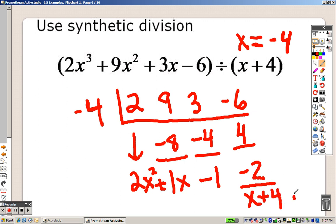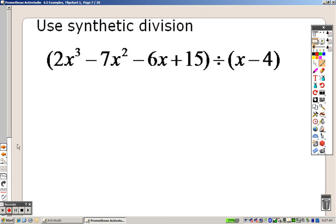And this is your remainder over the x plus 4. So there is your answer all down here. 2x squared plus 1x minus 1, sorry let me put that in there, plus a negative 2 over x plus 4.